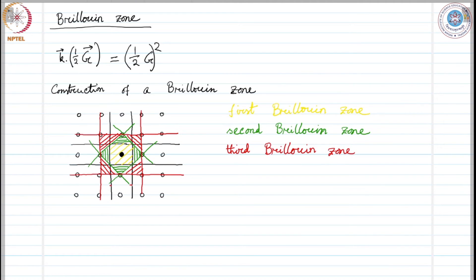It is important to understand the Brillouin zone very well. Therefore, we will invest some more time on this. We will see the reciprocal lattice for some simple examples and try to construct the Brillouin zone. So, we consider a simple cubic lattice.